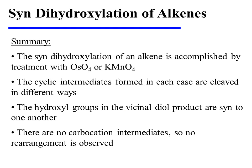In summary, the syn-dihydroxylation of an alkene is accomplished by treatment with osmium tetraoxide or potassium permanganate. The cyclic intermediates formed in each case are cleaved in different ways, but in both cases the hydroxyl groups in the vicinal diol product are syn to one another. There are no carbocation intermediates in these reactions, and so no rearrangement is observed.